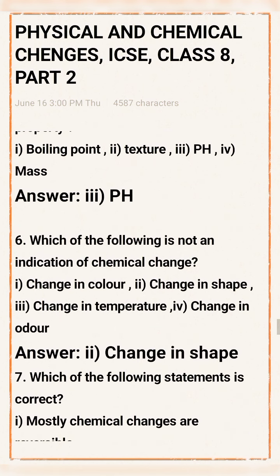Question 6: Which of the following is not an indication of chemical change? Option 1: Change in color. Option 2: Change in shape. Option 3: Change in temperature. Option 4: Change in odor. Answer: Option 2 — Change in shape is not an indication of chemical change.